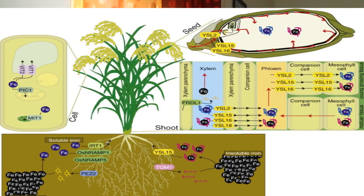Some varieties of rice respond to flooding by growing taller. As the water rises around them, they keep growing upwards so that the top parts of their leaves and flower spikes are always held above the water. This allows oxygen and carbon dioxide to be exchanged through the stomata on the leaves.